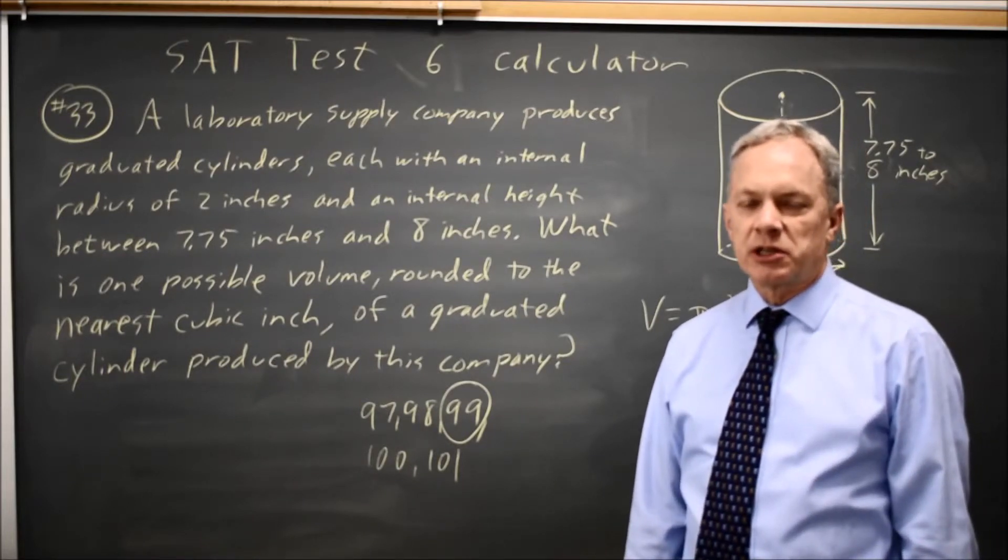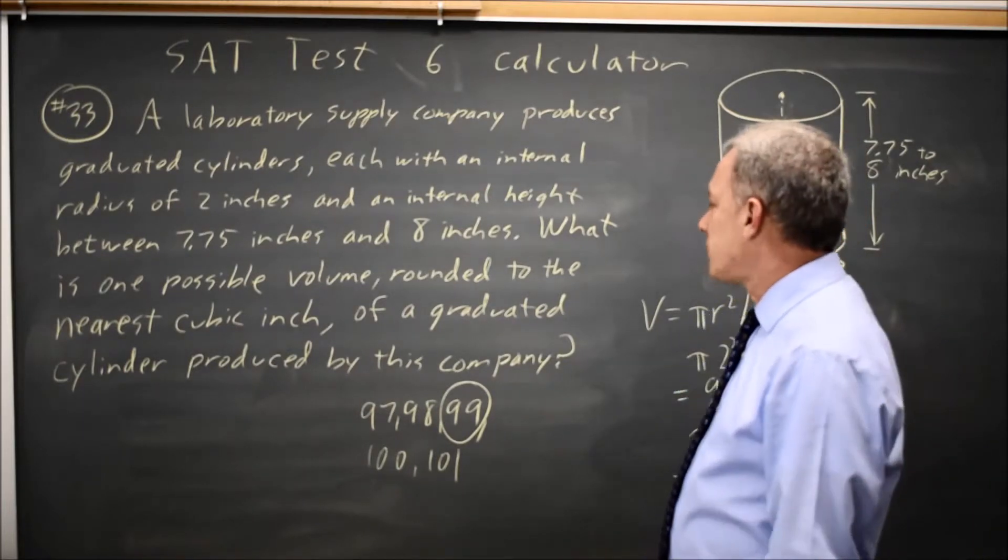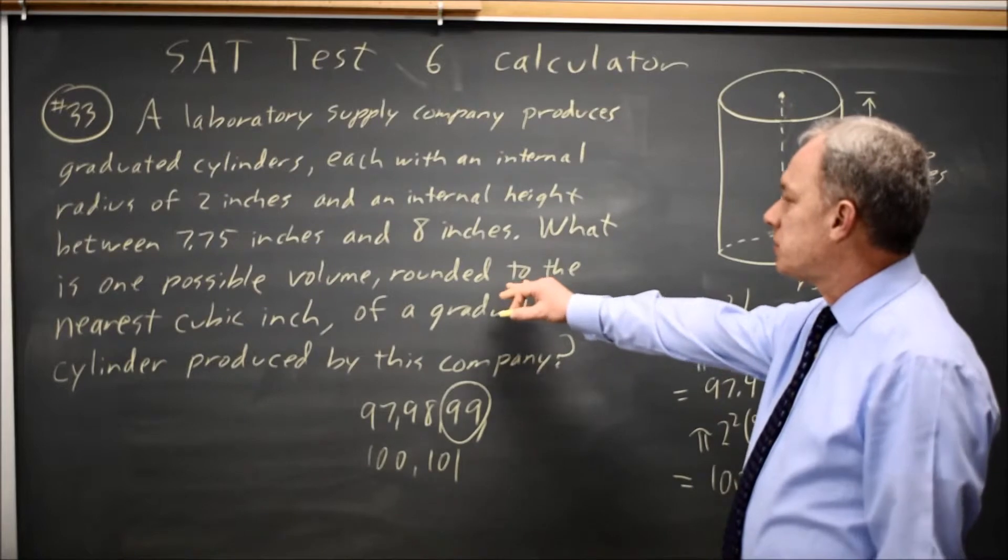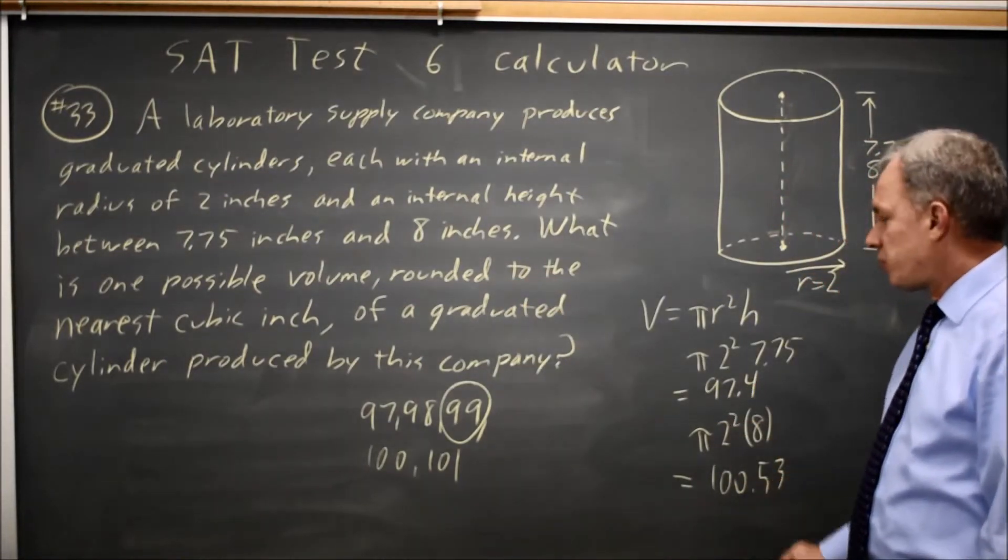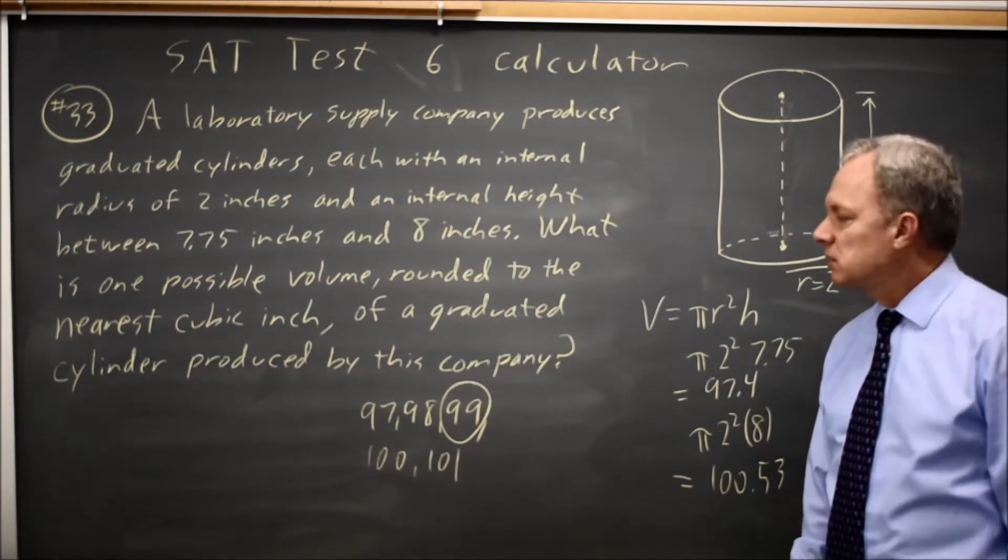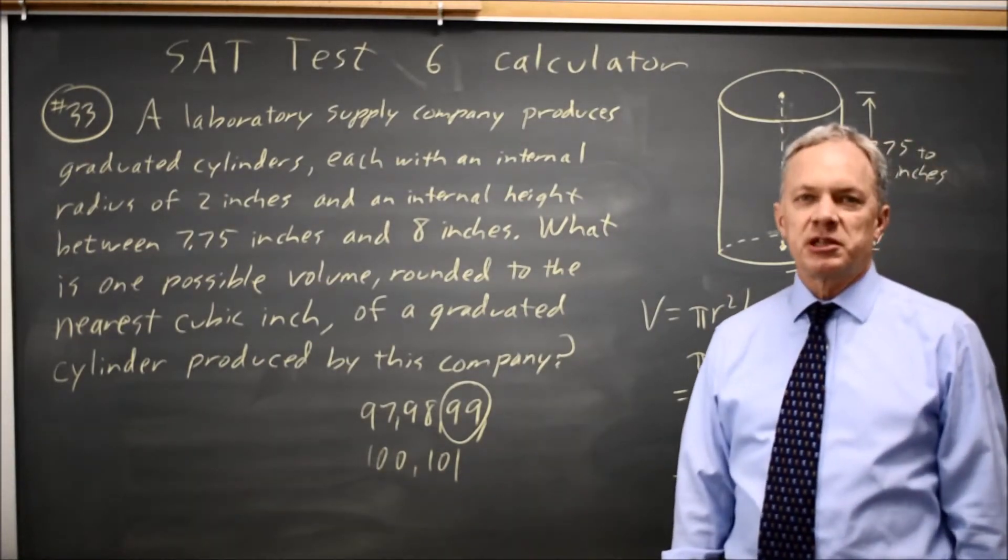But any of these answers would count as correct if you read carefully, and it's rounded to the nearest cubic inch. 97.4 does round to 97, and 100.53 rounds up to 101. So any of these five numbers would be considered correct.